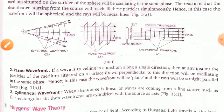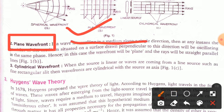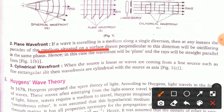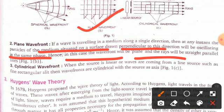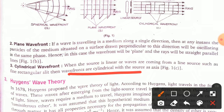The second type is the plane wavefront. If a wave is traveling in a medium along a single direction, the particles situated on a surface drawn perpendicular to that direction oscillate in the same phase. The wavefront is plane and the rays are straight and parallel. The third type is the cylindrical wavefront: when the source is linear, such as a fine rectangular slit, the wavefronts are cylindrical with the source as the axis.